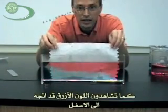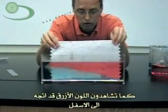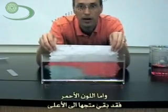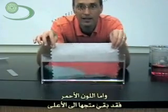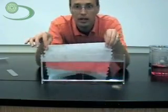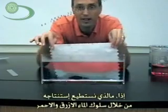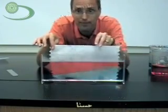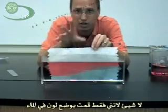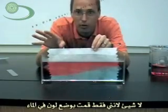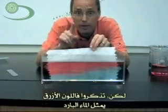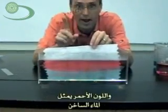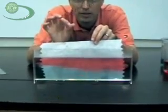As you can see, the blue all goes down to the bottom, and the red stays up on the top. So what does that tell us about blue versus red water? Nothing — because that's just the color I put in the water. But remember, the blue was cold and the red was hot water.